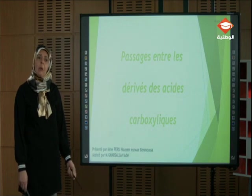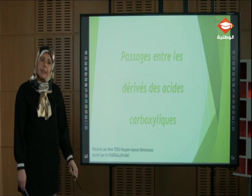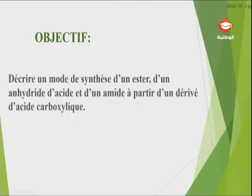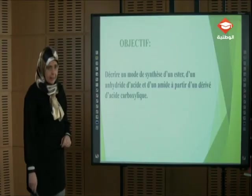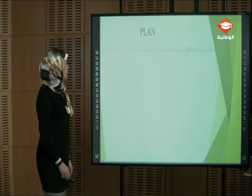On a découvert un nouveau dérivé qui était l'amide. Pour cette séance, on va essayer de voir comment passer d'un dérivé carboxylique à un autre. À la fin de la séance, on verra quelle est l'importance industrielle de ces dérivés d'acide carboxylique. L'objectif est de décrire un mode de synthèse d'un estère, d'un anhydride d'acide et d'un amide à partir d'un dérivé d'acide carboxylique.